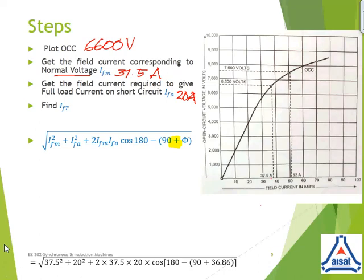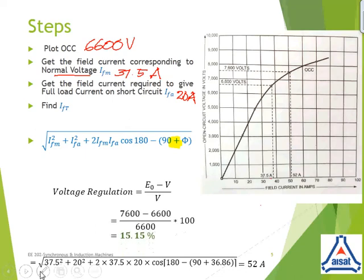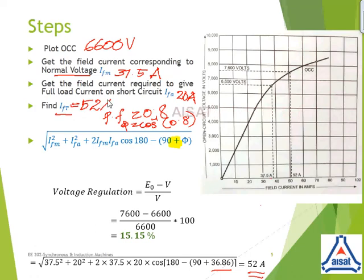How will you obtain the value of phi? Because in the question, it is given 0.8 power factor lagging. Which means that the power factor of the load is 0.8. Which means, phi is obtained as cos inverse of 0.8, which is nothing but 36.86. That's how this angle 36.86 comes. After computation, you will be getting a value of 52 amps. That makes your total IFT value. IFT value, you are now getting it as 52 amps.